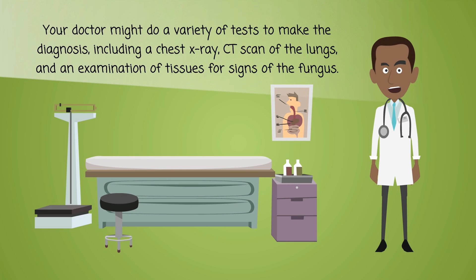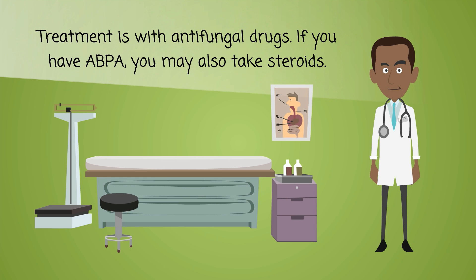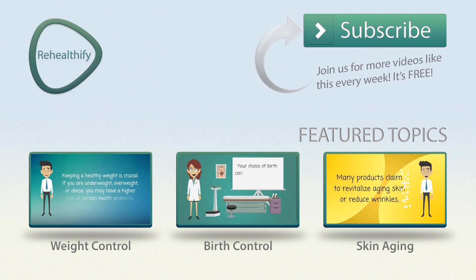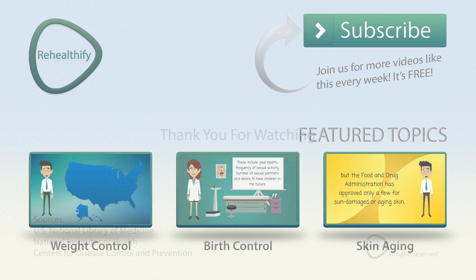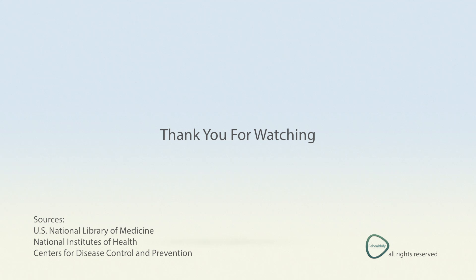Your doctor might do a variety of tests to make the diagnosis, including a chest x-ray, CT scan of the lungs, and an examination of tissues for signs of the fungus. If you have ABPA, you may also take steroids.